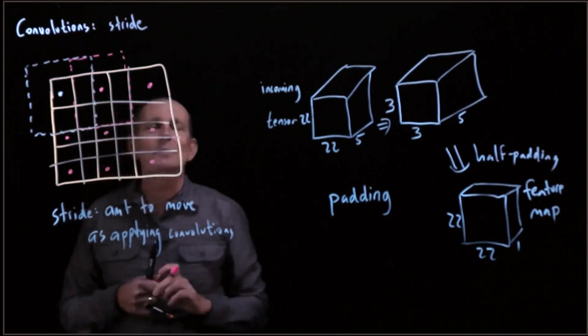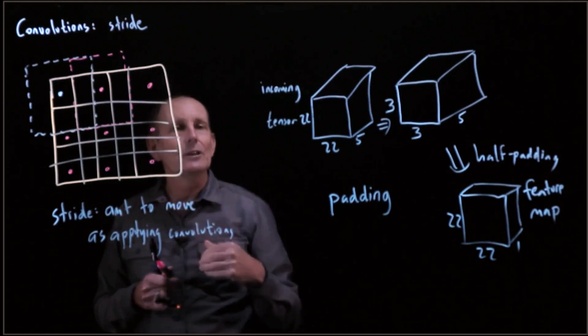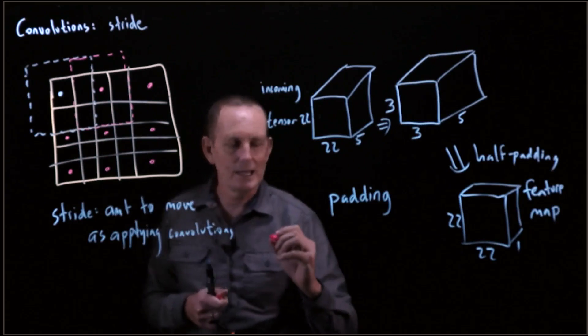What would happen here? That would mean, instead of ending up—so we started with a 5 by 5, in a normal 3 by 3 kernel with half padding, if we have a stride of 1, let's write this down.